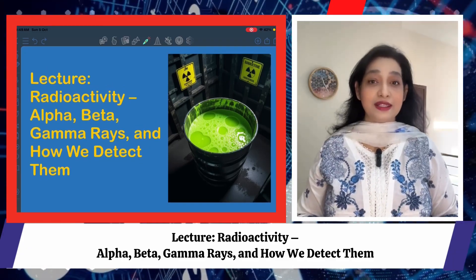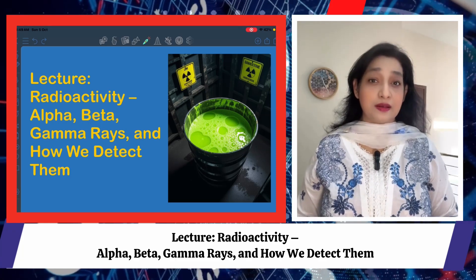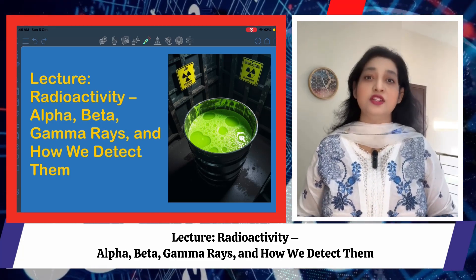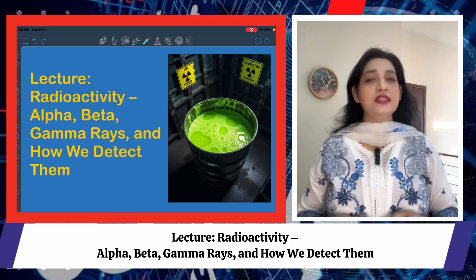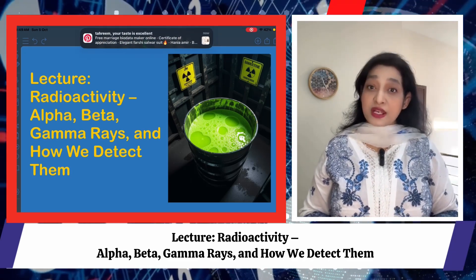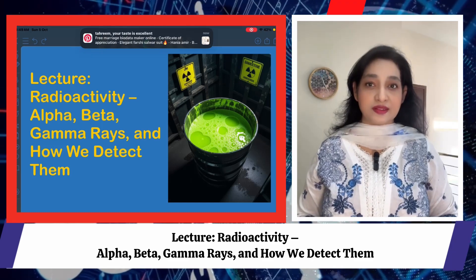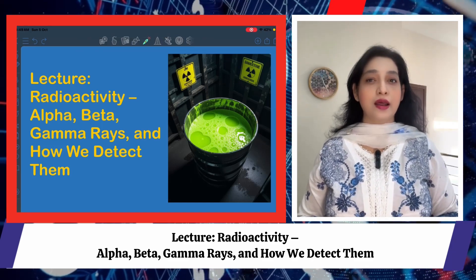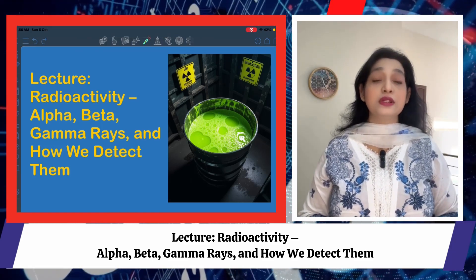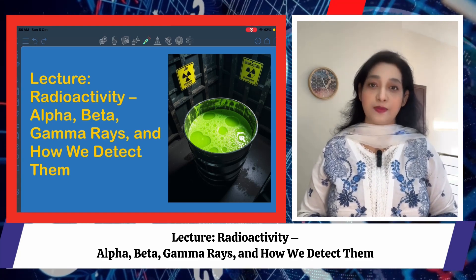What is radioactivity? Imagine atoms as tiny solar systems — the nucleus is the sun, made of protons and neutrons, with electrons orbiting around. Most atoms are stable, like a well-balanced solar system. But some nuclei are unstable — they are like an overloaded suitcase that wants to unpack to become more stable.